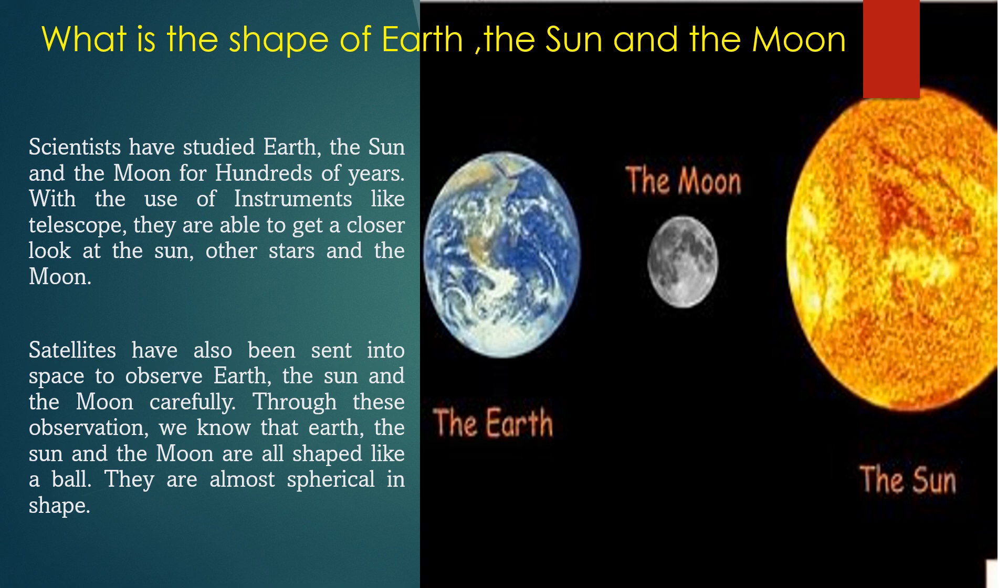Satellites have also been sent into space to observe the Earth, the Sun, and the Moon carefully. Through these observations, we know that Earth, the Sun, and the Moon are all shaped like a ball. They are almost spherical in shape.